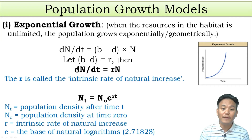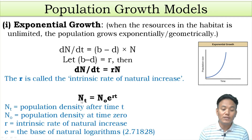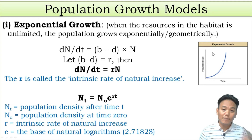The exponential growth curve is represented by the formula dN/dt = rN, where r is the intrinsic rate of natural increase — that is, birth rate minus death rate. r is positive if birth rate exceeds death rate and negative if death rate exceeds birth rate. Integrating this formula gives: Nt = N₀ · e^(rt), where Nt is the population density after time t, N₀ is the initial population, r is the intrinsic rate, and e is the base of the natural logarithm.